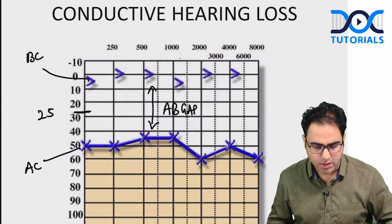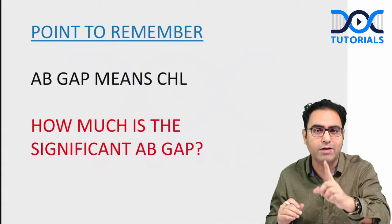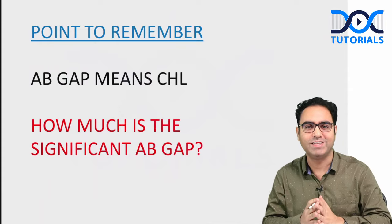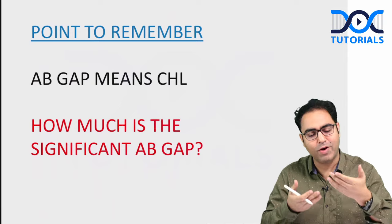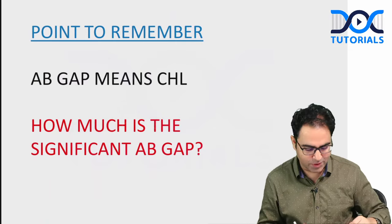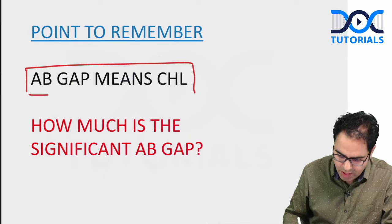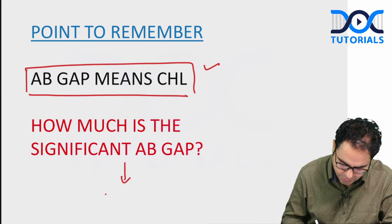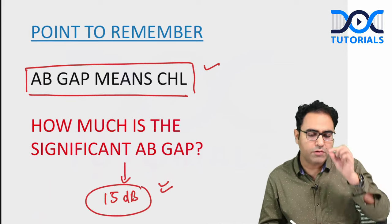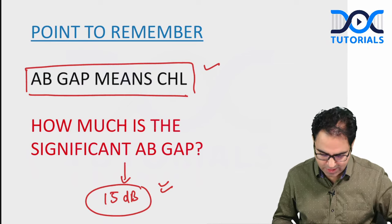In clinical practice, one day a relative may bring an audiometry report to you. You should be able to say whether it is conductive or SNHL. The key point: AB gap means conductive hearing loss. A significant AB gap is 15 decibel minimum. This is the fundamental feature of conductive hearing loss — there must be some AB gap present.